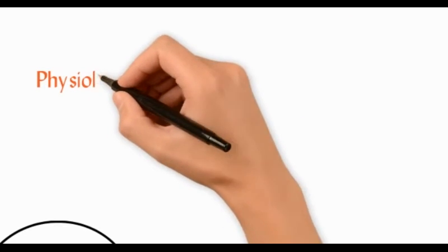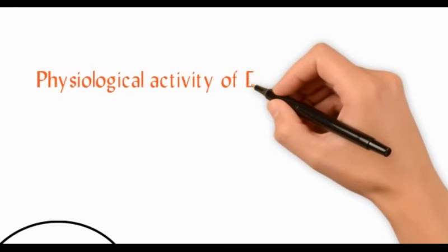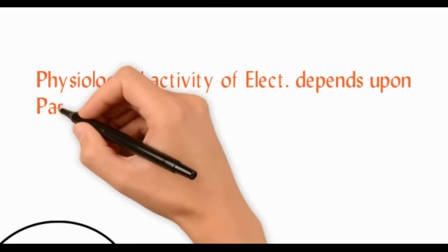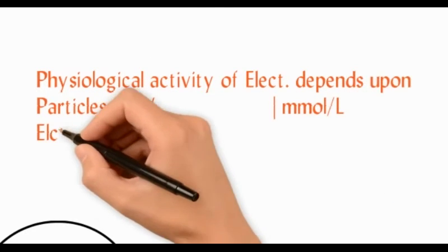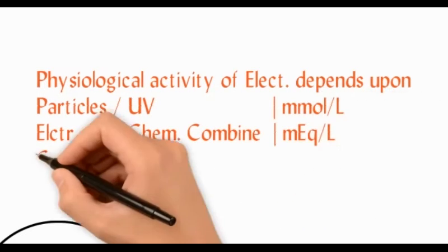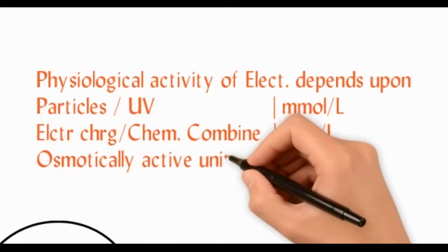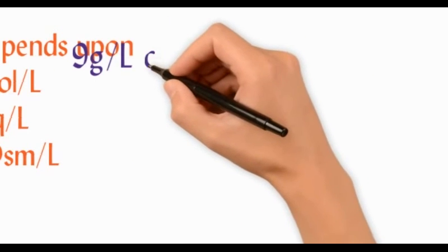The physiological activity of an electrolyte depends upon the amount of particles per unit volume, called millimoles per liter; the electrical charges or chemical combining activity per unit volume, called milliequivalents per liter; and the amount of osmotically active units per unit volume, called milliosmoles per liter.